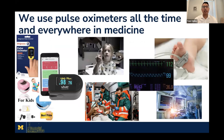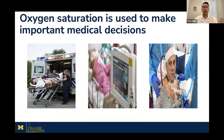We now use pulse oximeters all the time in medicine — from at home, on our watches, or as we told everyone during the pandemic to go out and buy a pulse oximeter, to being continuously measured in the operating room or the intensive care unit. These devices are also used every day to make important life or death decisions: whether to bring someone to the hospital, whether to put someone on a breathing machine, whether someone should get a lung transplant.